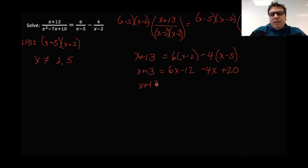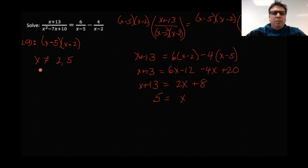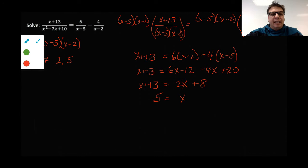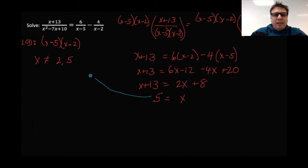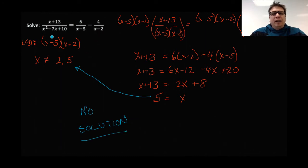So x plus 13 is equal to six x minus 12 minus four x plus 20, which simplifies to x plus 13 equals two x plus eight. Subtracting x from both sides and subtracting eight from both sides gives x equals five. But looking back at what we established, x cannot equal five — it would make the denominator zero. So since x cannot equal five, there is no solution. No matter what value of x you substitute in, nothing will come out right. There is no value of x that will make this original statement true.